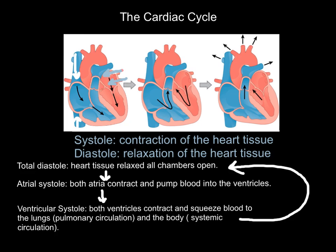The final stage of the cardiac cycle is total diastole again — the heart fully relaxes. Once the atria have squeezed blood into the ventricles, and the ventricles have squeezed it to where it needs to be, all four chambers open again to allow the next amount of blood to flow back into the heart. So there are four stages to the cardiac cycle: diastole, followed by atrial systole, followed by ventricular systole, followed by diastole again. That's how blood flows, where it's trying to get from and to, and the order in which our heart contracts.